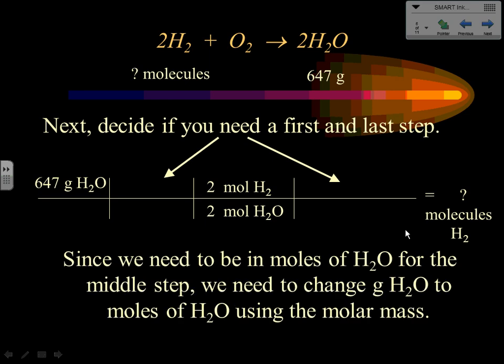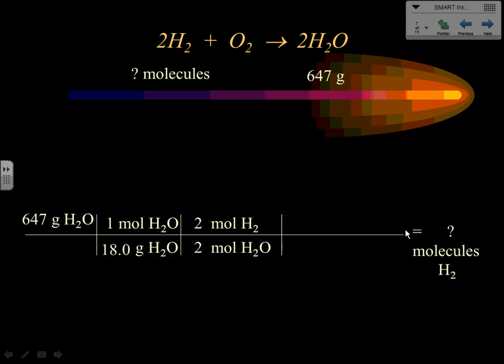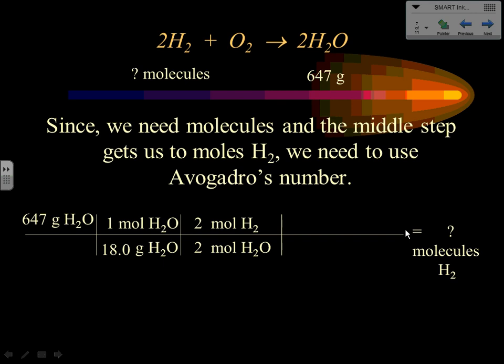Since we need moles of water for the middle step, step one must convert grams of water to moles of water using molar mass. One mole of water is 18.0 grams, so that's our first conversion factor. Then in the third step, since we need molecules of hydrogen and we're in moles of hydrogen, we apply Avogadro's number — 6.02×10²³ molecules per one mole — because H₂ is a molecular substance.